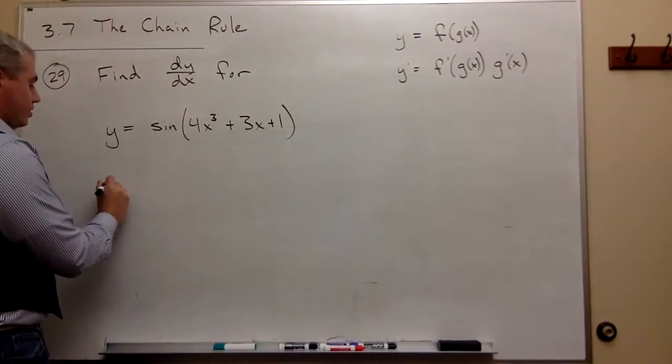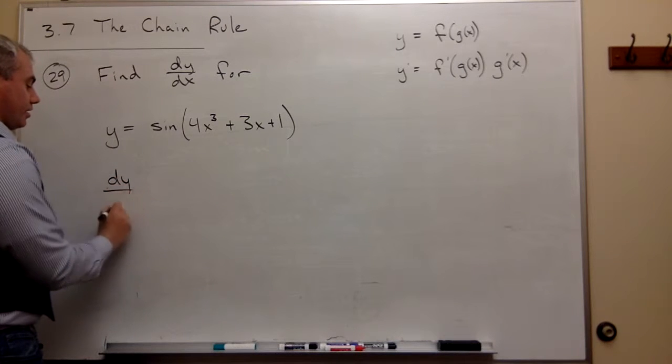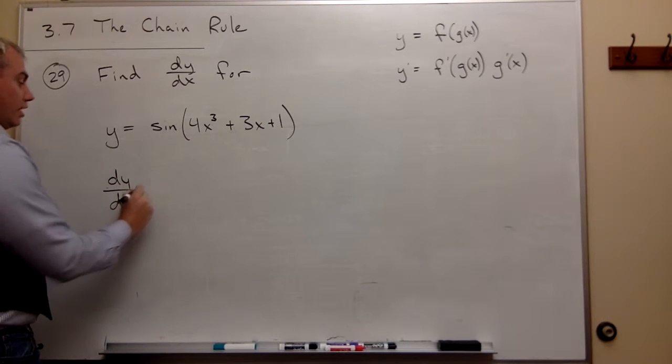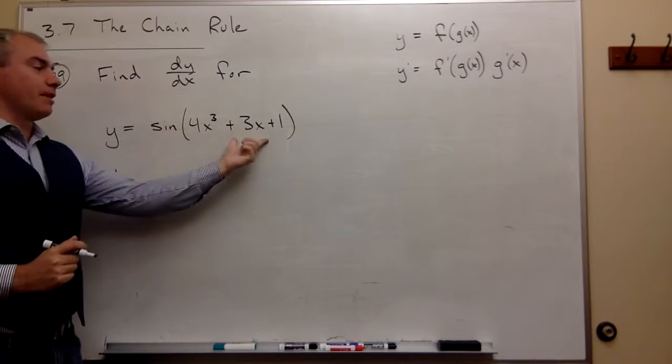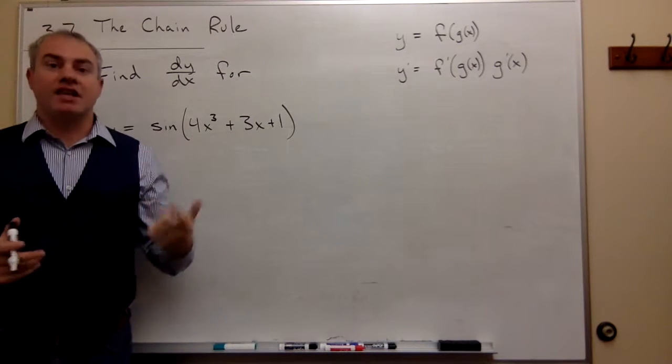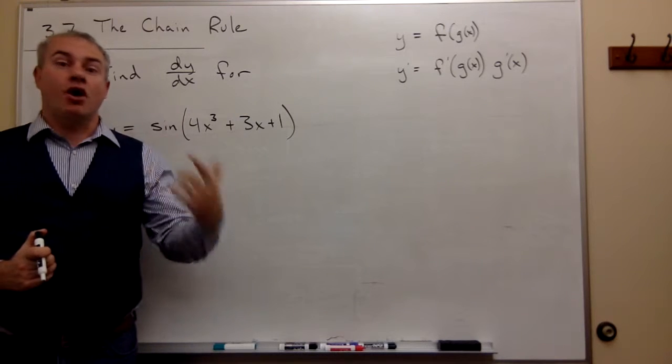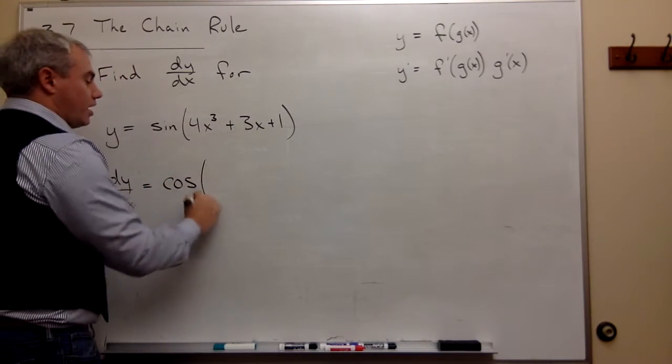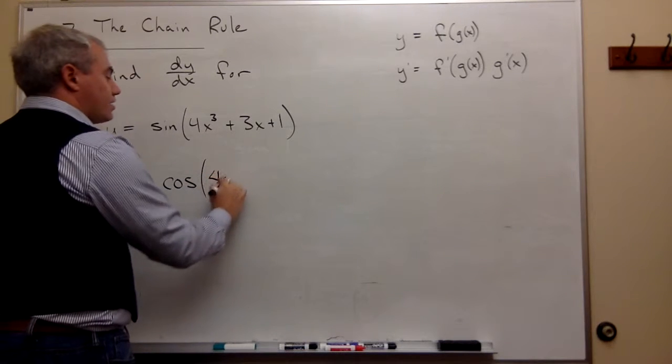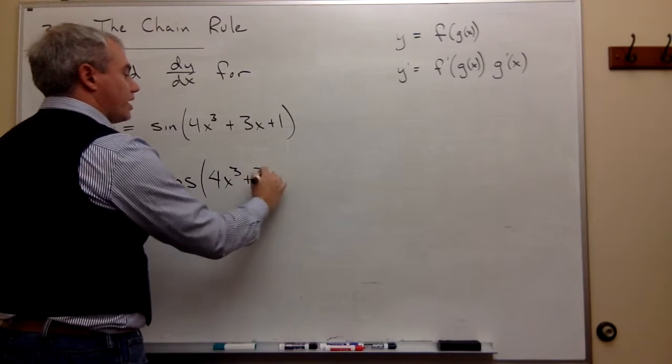So if I start finding dy dx here, then I'm going to start by what's the derivative of sine of something? Well, the derivative of sine of something is cosine of something. So I'll write that in. This is cosine of 4x cubed plus 3x plus 1.